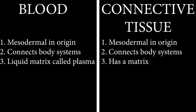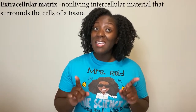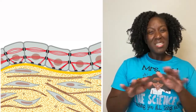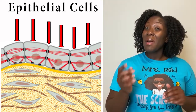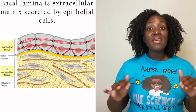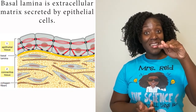Next up we have blood. You may be thinking blood is a liquid — how can it be a connective tissue? Well, blood has the characteristics of connective tissue. It has a liquid matrix called plasma. Let's briefly discuss extracellular matrix: it is non-living, intercellular material that surrounds the cells of a tissue. Epithelium has a matrix but not a lot, because epithelial cells are bound together into sheets. The extracellular matrix is made of basal lamina, which is part of the basement membrane.